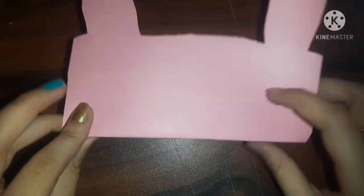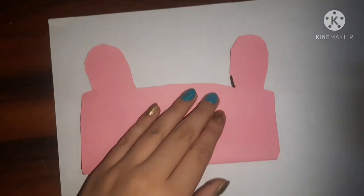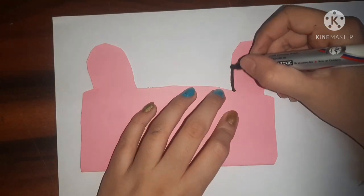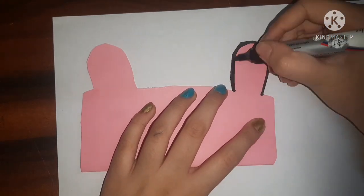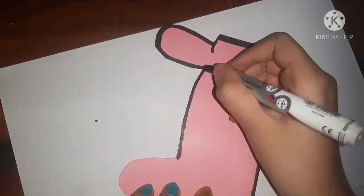After that when I was satisfied I just cut it out with the help of a pair of scissors and now it was looking something like this. Now I'm just going to give it a clean outline with a black marker and don't at all skip this step because it looks very neat and nice when you give a nice black outline.